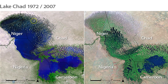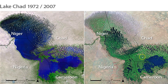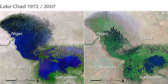Here's a picture from 1972 showing how the lake encompassed parts of Nigeria, Cameroon, and Chad. In 2007, there's no water in Nigeria at all — maybe just a wetland area. Niger has a little bit of water, and then Cameroon and Chad really have the largest remains of the water from the lake itself.